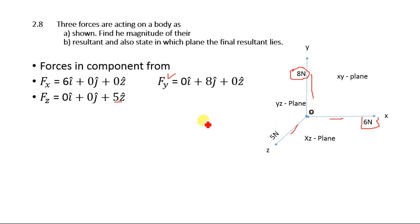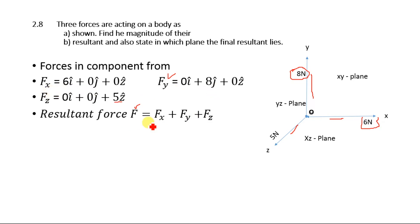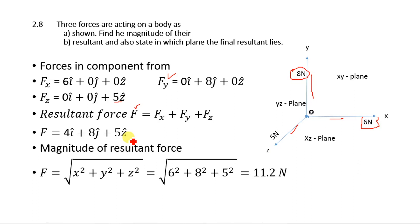Now find the magnitude of the resultant. The resultant force equals Fx + Fy + Fz, giving F = 6i + 8j + 5k. For the magnitude, we use F = √(x² + y² + z²), where x = 6, y = 8, and z = 5. Substituting: F = √(6² + 8² + 5²) = √(36 + 64 + 25) = √125 ≈ 11.2 N.